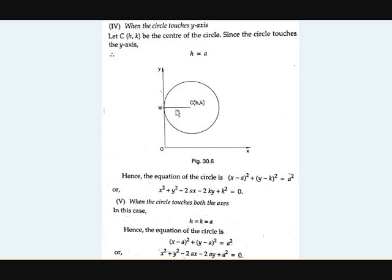When the circle touches both axes: since it touches the x-axis we have a equals k, and since it touches the y-axis we have a equals h. So a equals h equals k. The equation becomes x minus a whole square plus y minus a whole square equals a squared. Expanding, the a squared terms partially cancel, and the final equation is x squared plus y squared minus 2ax minus 2ay plus a squared equals zero.